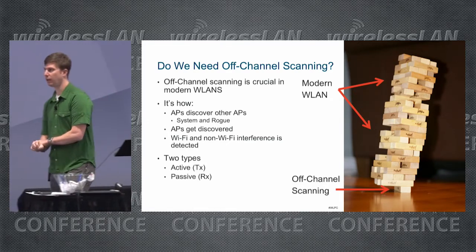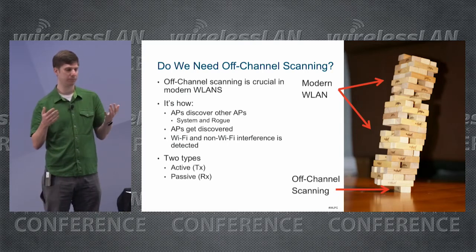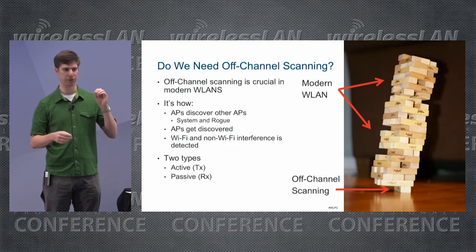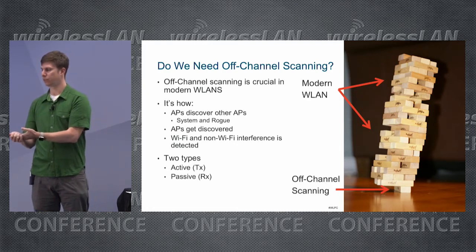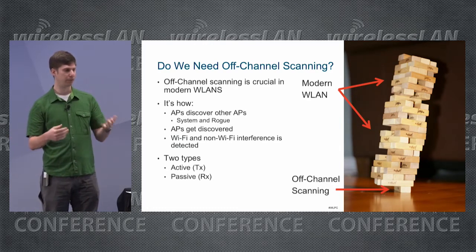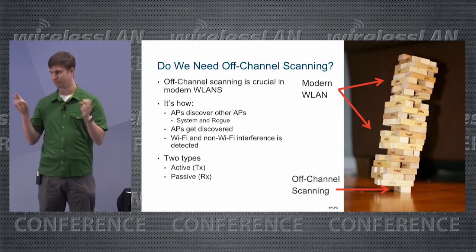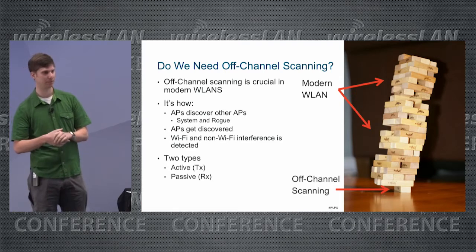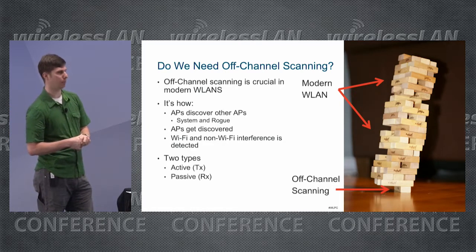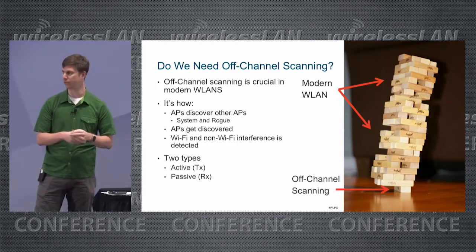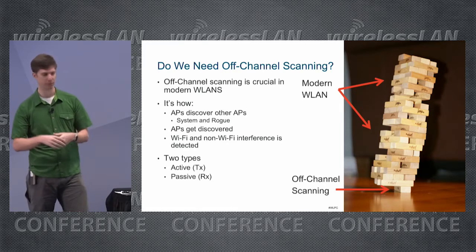There are two types of off-channel scanning and they operate simultaneously. You have active off-channel scanning where the access point is transmitting — this covers things like neighbor discovery or client containment. Then there's passive, or receive, off-channel scanning, which is used for things like rogue detection and discovering other access points.